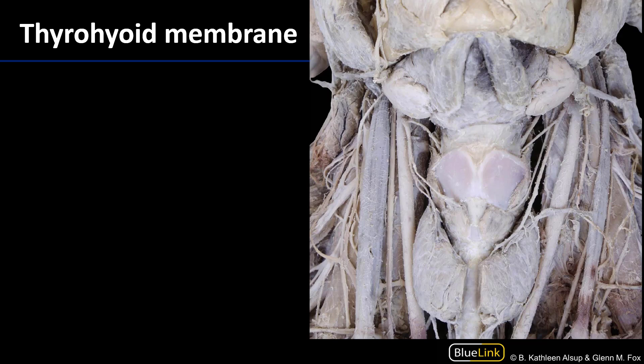The first membrane we'll discuss is the thyrohyoid membrane. The thyrohyoid membrane attaches the thyroid cartilage to the hyoid bone. It is an extrinsic membrane of the larynx and one of the key elements to look for as we navigate the larynx anteriorly or laterally. The thyrohyoid membrane is pierced laterally by the superior laryngeal artery and the internal branch of the superior laryngeal nerve.